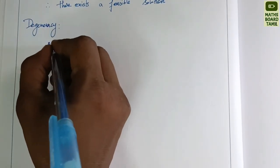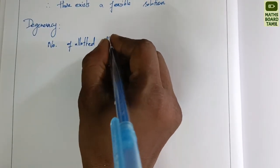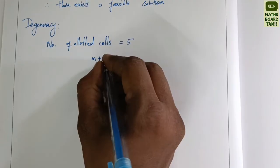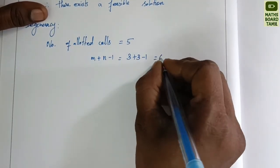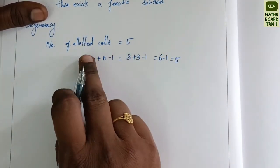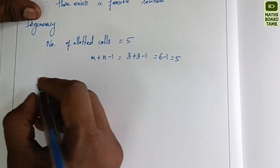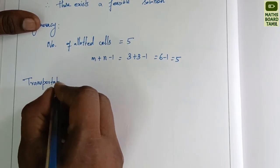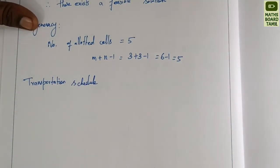Degeneracy check: the number of allocated cells is 5. M plus N minus 1 equals 3 plus 3 minus 1 equals 6 minus 1 equals 5. The number of allocated cells equals M plus N minus 1, so degeneracy is satisfied.